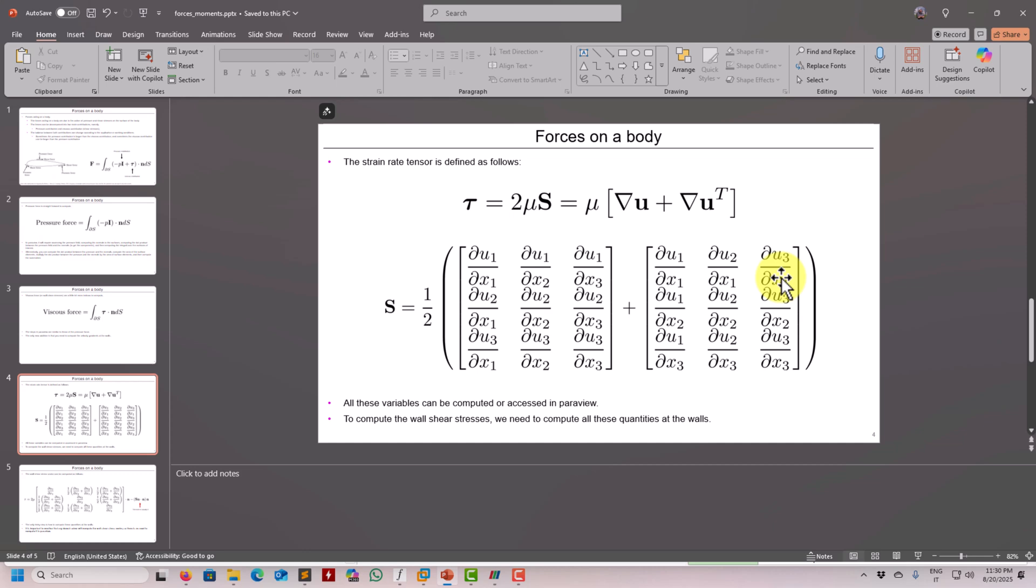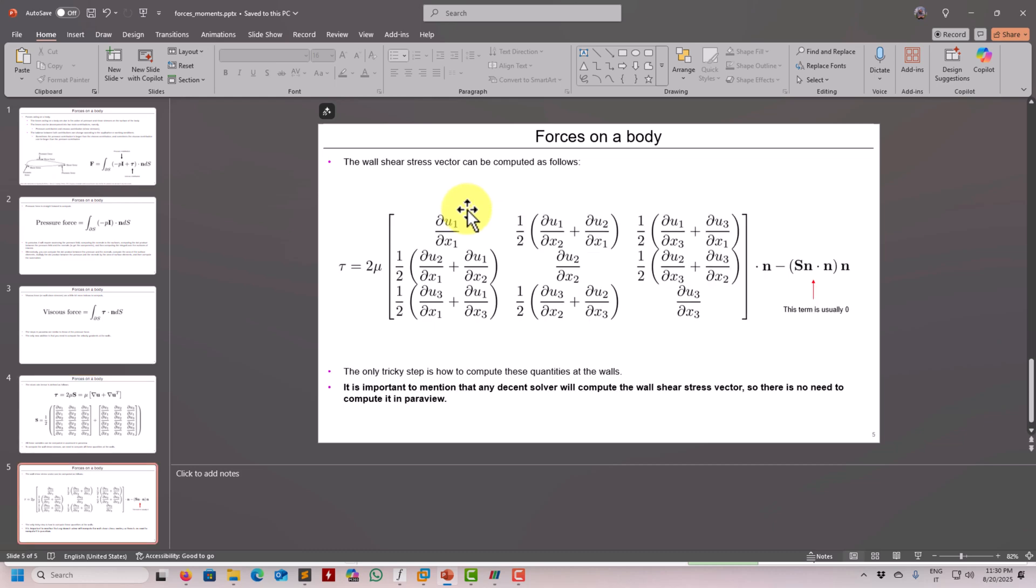From both solvers we're going to get the gradient and compare the gradient from Paraview with the gradient from the solver. You'll see there are some differences - maybe the gradients from the solver are more accurate. It's up to you to judge that. You'll need to compute this gradient at the walls, but at the wall velocity is zero - that's a problem. I'll show you how to do that.